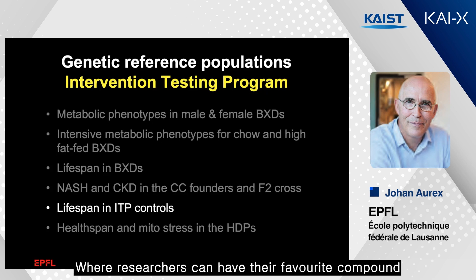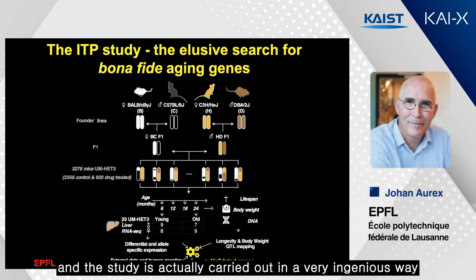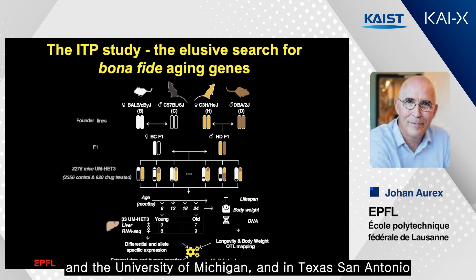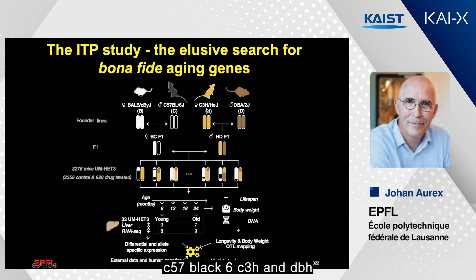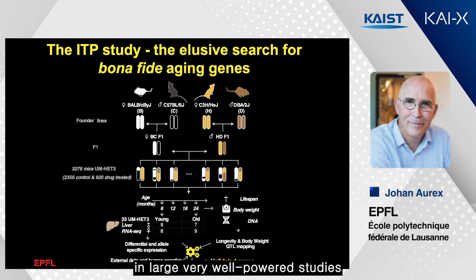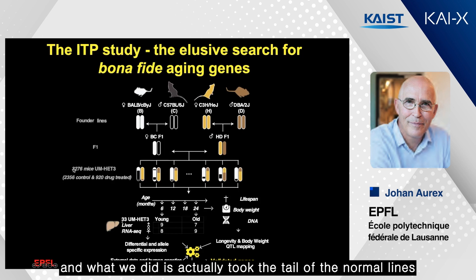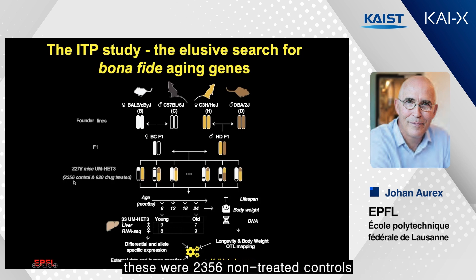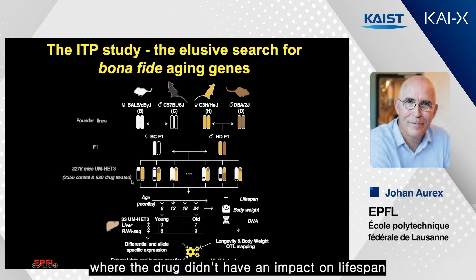Rare researchers can have their favorite compound tested for anti-aging in a study carried out at three different sites: the Jackson Lab, University of Michigan, and Texas San Antonio. It's done in a heterogeneous population — a cross between BALB/c, C57, LEG6, C3H, and DBA — and the F2 offspring are tested. So far, 20 compounds have been tested in very well-powered studies. We took the control arms: 2,356 non-treated controls and 920 drug-treated controls where the drug had no impact on lifespan.